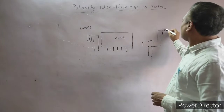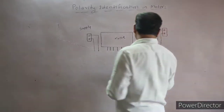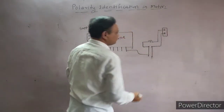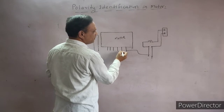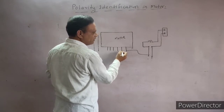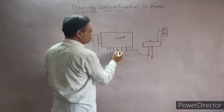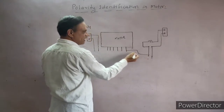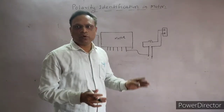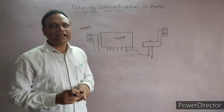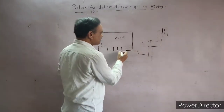First, make the switch on for the socket. These are the two probes of the series test lamp. We will connect one probe to a wire and keep it fixed, then move the other probe to each remaining wire. If there is connectivity and the lamp glows, then those two wires form a coil. If the lamp doesn't glow, there is no connection, so we move the mobile probe to the second, third, fourth, and fifth wire to find where the lamp glows.